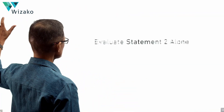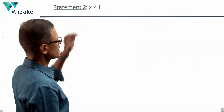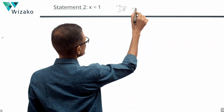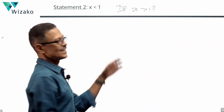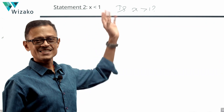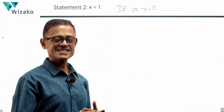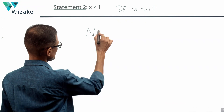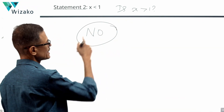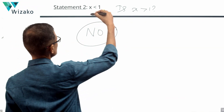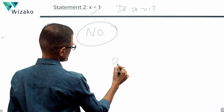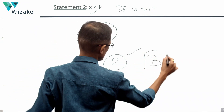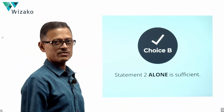Statement 2 says X is less than 1. Our question is: Is X greater than 1? If X is less than 1, we can conclusively state that X is not greater than 1 — that's a definitive NO. A definitive answer means the statement is sufficient. Statement 2 alone is sufficient, and Statement 1 was not sufficient. Therefore, the correct answer is B.